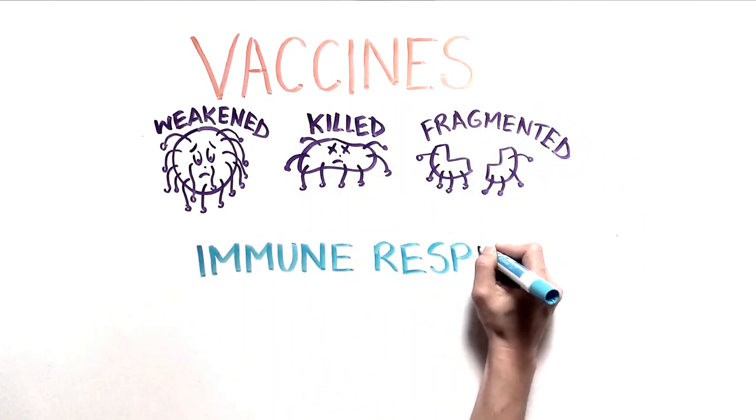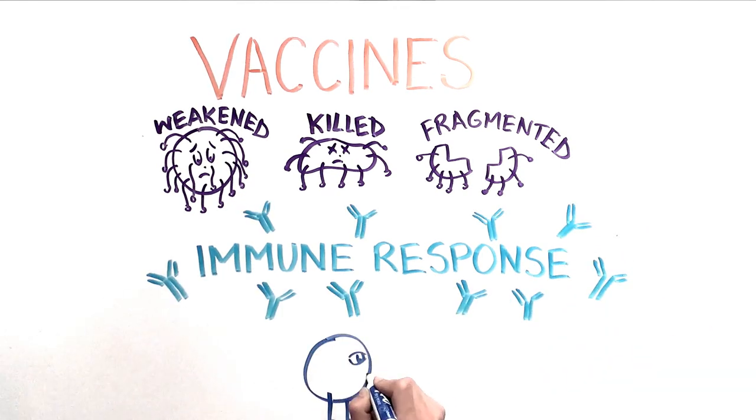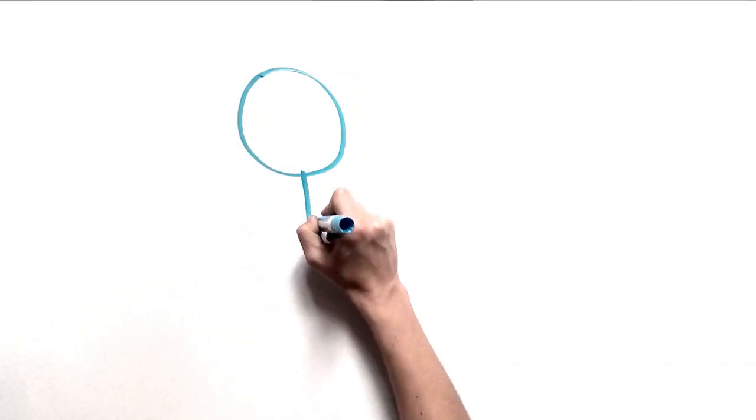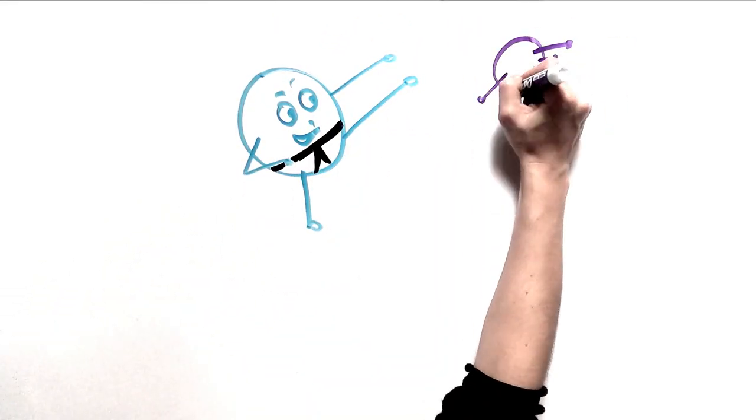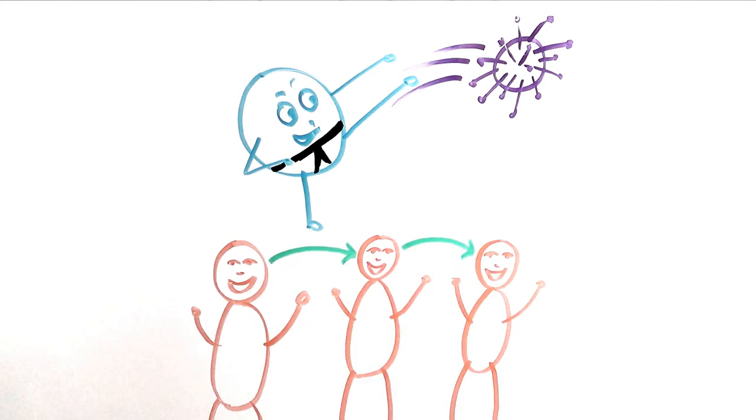Once inside your body, the vaccine triggers an immune response, training your body to recognize and fight off the specific pathogen. If your body were to encounter this pathogen again, your immune system will be prepared to attack and destroy it more quickly, preventing you from getting sick and, importantly, from passing the illness on to others.